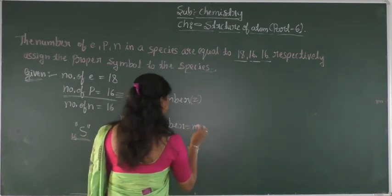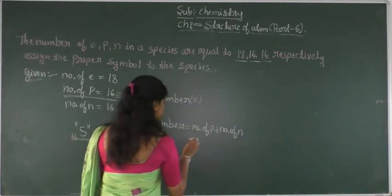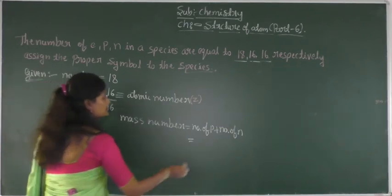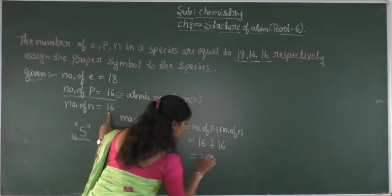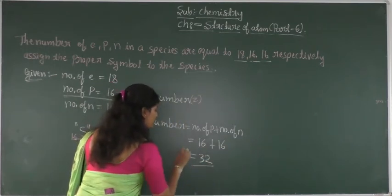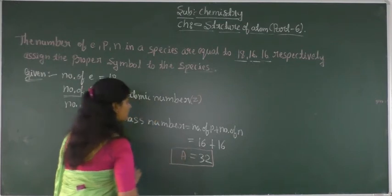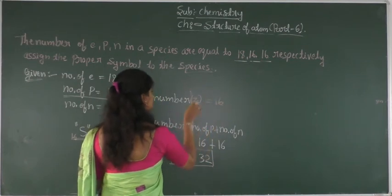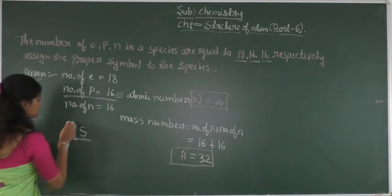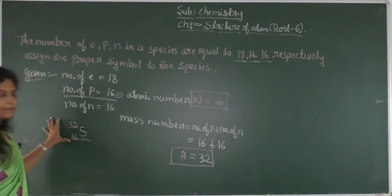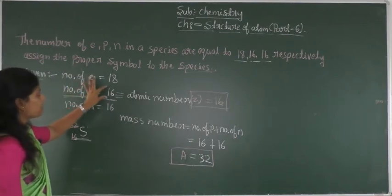Mass number equals number of protons plus number of neutrons. Number of protons is 16, plus number of neutrons 16, gives 32. So the mass number is 32 and the atomic number is 16, giving us S-32 with Z equals 16. However, since the number of electrons is 18 and the number of protons is 16, the number of protons does not equal the number of electrons.